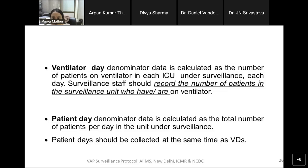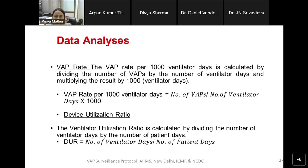Surveillance staff should record the number of patients in the surveillance unit who are on a ventilator. Patient day is the total number of patients physically present in the surveillance unit, collected at the same time as ventilator day. The VAP rate is the globally accepted metric: number of VAP episodes per 1,000 ventilator days. You divide the number of VAPs by the number of ventilator days and multiply by 1,000.